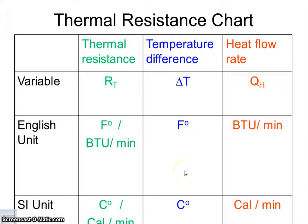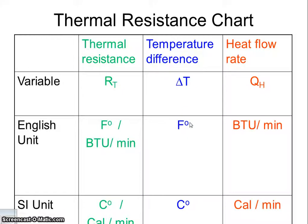Here's a quick review question. Notice that the degree symbol is on this side of the Fahrenheit — aren't we used to seeing it over here? It's not a typo. It's on this side because you're talking about temperature difference, meaning that you've already subtracted two temperatures. It's a signal that the subtraction has already taken place, and what you're dealing with is temperature difference, not temperature. That's something important to remember.